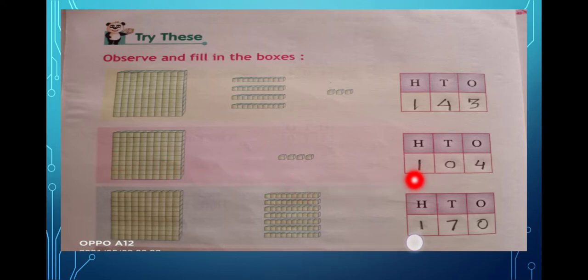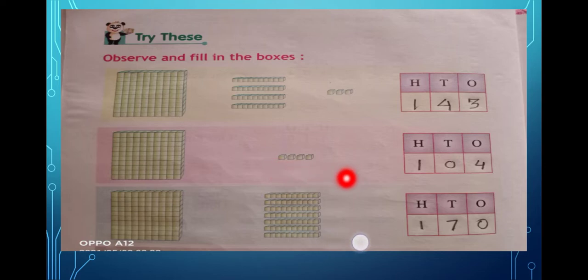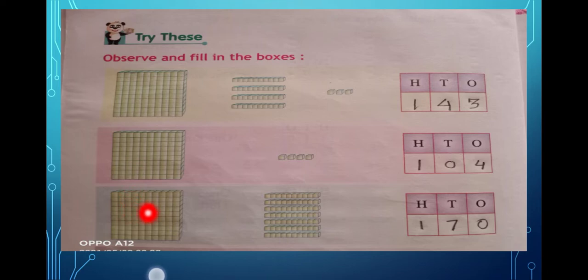One hundred is written here. In the tens place there is nothing, so zero will come. The separated ones — how many are there? Four. That means four ones, zero tens, and one hundred, so the number is one hundred and four.